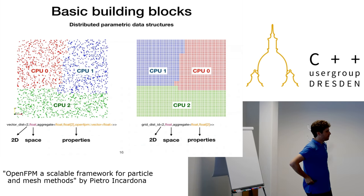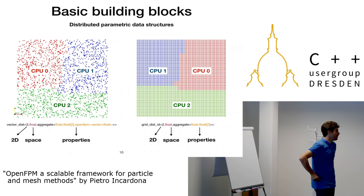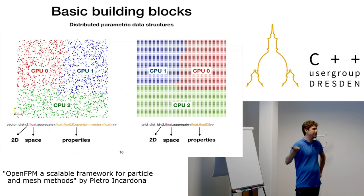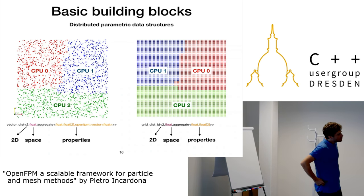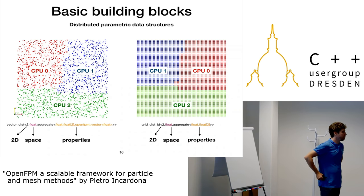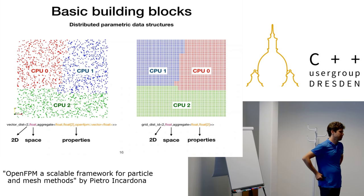Of course it doesn't scale to infinity. If 50% of your data needs to cross a boundary, you won't scale. In that case you have a scaling problem and can't do much. To scale on 8 processors, each processor must have on the order of 10,000 particles, otherwise you won't see scaling benefit.